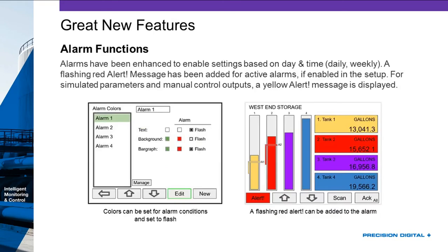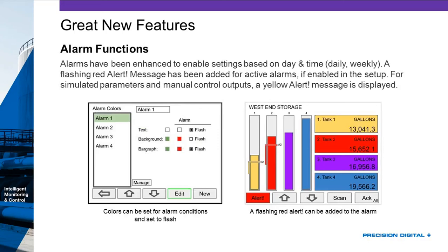We have more alarm functions available. Alarms can now flash, and they have programmable color features as we saw earlier. You can also base alarms on time and date. For example, an alarm that goes off every day at 8 o'clock — maybe to get someone's attention to load something, or to reset a total, or to check your process every 4 hours. And you can set it up only on weekdays if you like. The real-time clock lets you set time and date alarms.